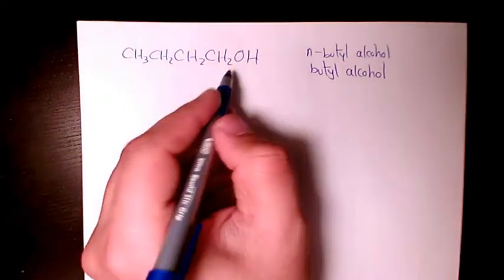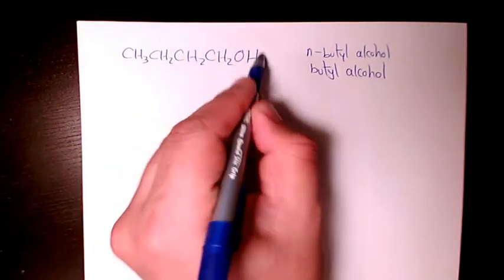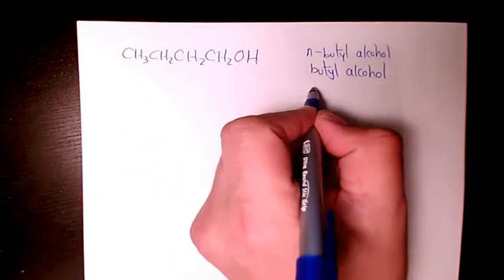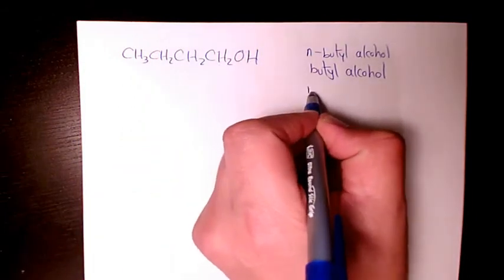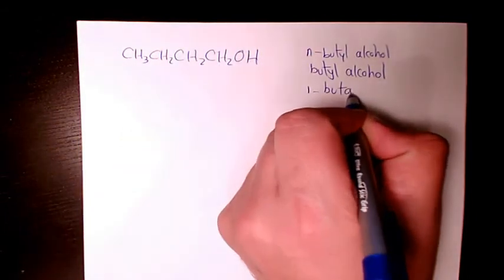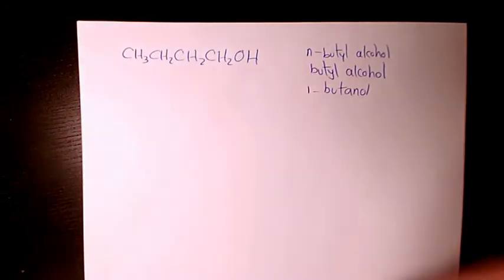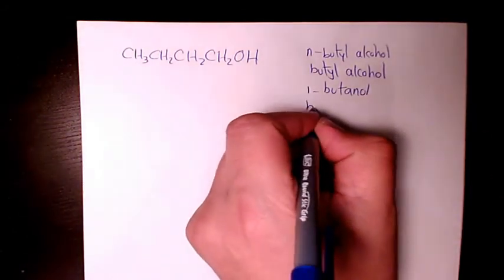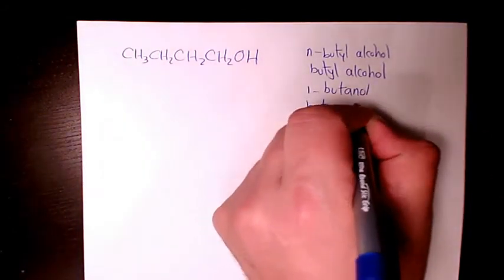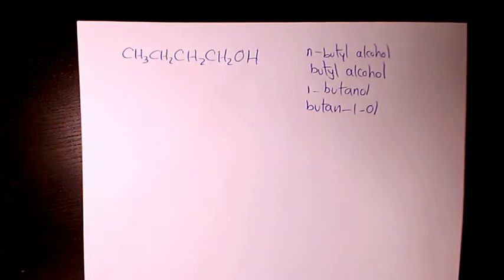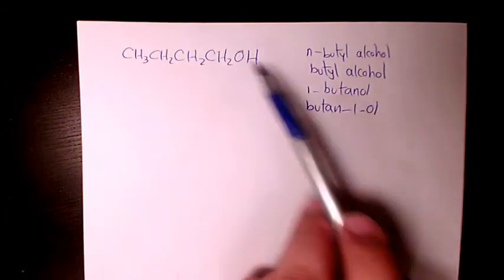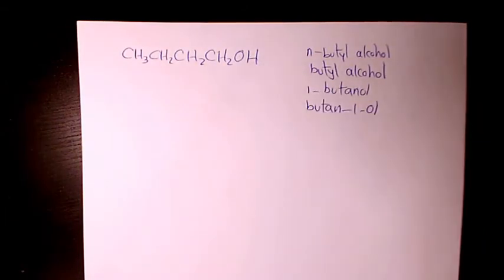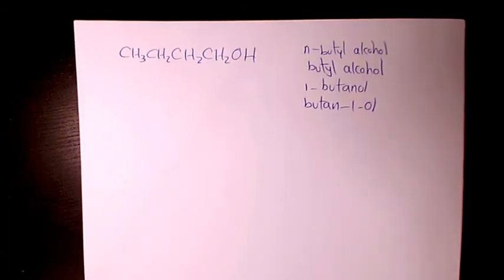We can also call it — because this OH connects to the first carbon — we can call it 1-butanol, or butan-1-ol. All of them are correct: butan-1-ol, 1-butanol, butyl alcohol, and normal or n-butyl alcohol. I hope you enjoyed this video. Please leave me a comment if you have any question and I'll get back to you as soon as possible.